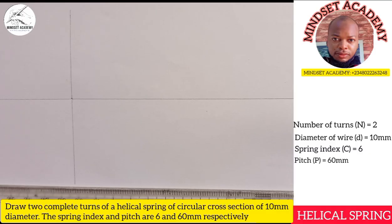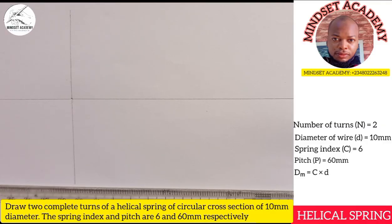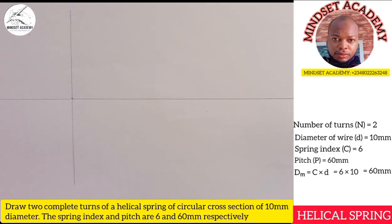To calculate both the internal and external diameter, we need the mean diameter first. The mean diameter is the average of the outer and inner diameter — that is, (outer + inner) divided by 2. Since the outer and inner diameters are not given, we recall that mean diameter equals the spring index times the circular cross-section. So mean diameter = 6 × 10 = 60 millimetres.